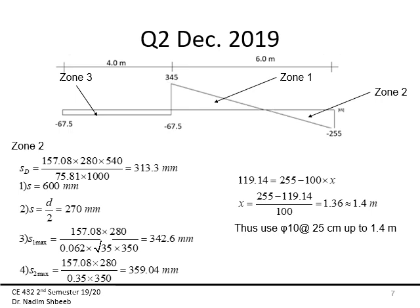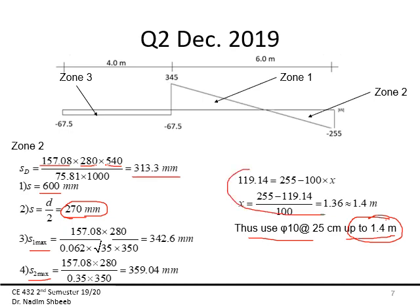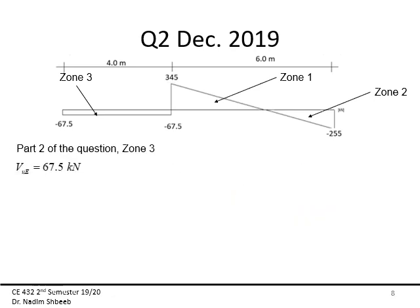Vs for Zone 2: (176 − 119.14×0.75) / 0.75 = 75.81 kN. Stirrup spacing: s = (2 × 78.54 × 280 × 540) / 75,810 = 313 mm. Comparing to d/2 = 270 mm and av,min limits, the governing spacing is 270 mm. I elected to use φ10 at 25 cm up to 1.4 m from that support. For the exam, you should stop at reporting the spacing.